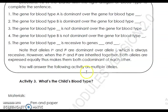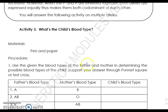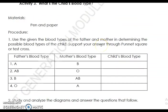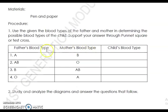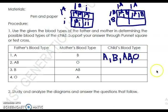Let's try to solve the problem. You are given the father's blood type and mother's blood type, and you must find the possible blood types of the children. Let's solve number one using a Punnett square. Father is type A, mother is type B. In this case, there are two possible genotype combinations.